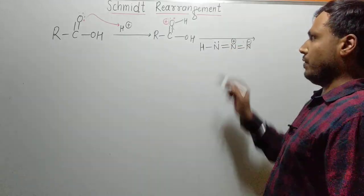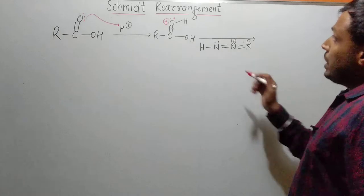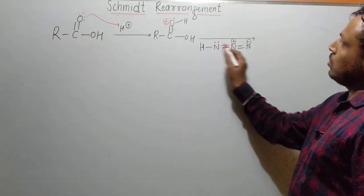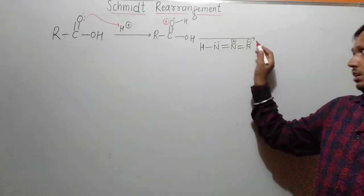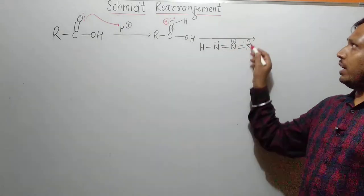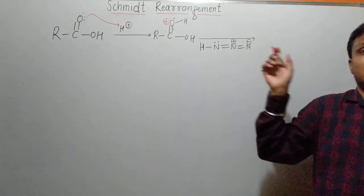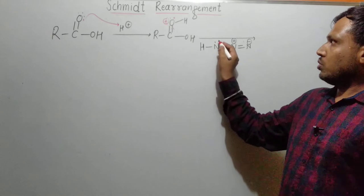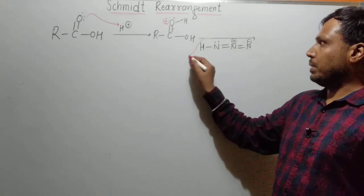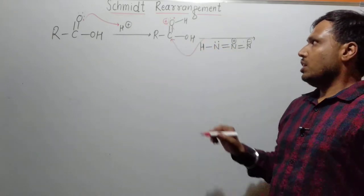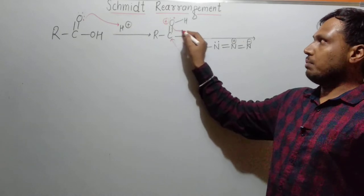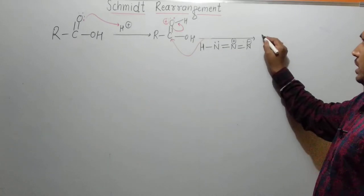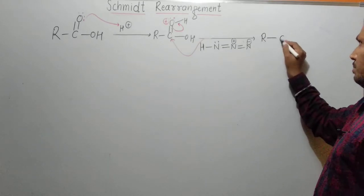Now at this electrophilic center, we have nucleophilic centers available. One is this electron pair and another is this electron pair on the nitrogen of HN₃. Due to resonance, the electron pair available for attack is the nitrogen lone pair. This nitrogen attacks the electrophilic carbon, forming a new intermediate.